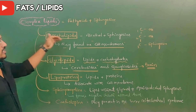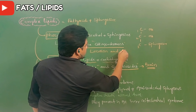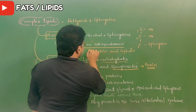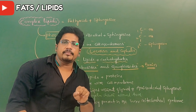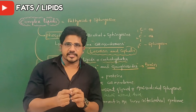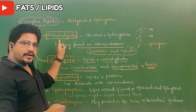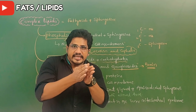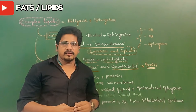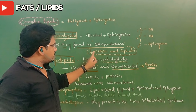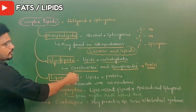Phospholipids are generally present in cell membranes. The main examples are lecithin and cephalin. Lecithin is present in the alveoli membrane — the air sacs in the lungs where gas exchange takes place. Lecithin is a phospholipid that acts as a surfactant, increasing the surface area so that more oxygen enters the blood and more carbon dioxide exits through the lungs.